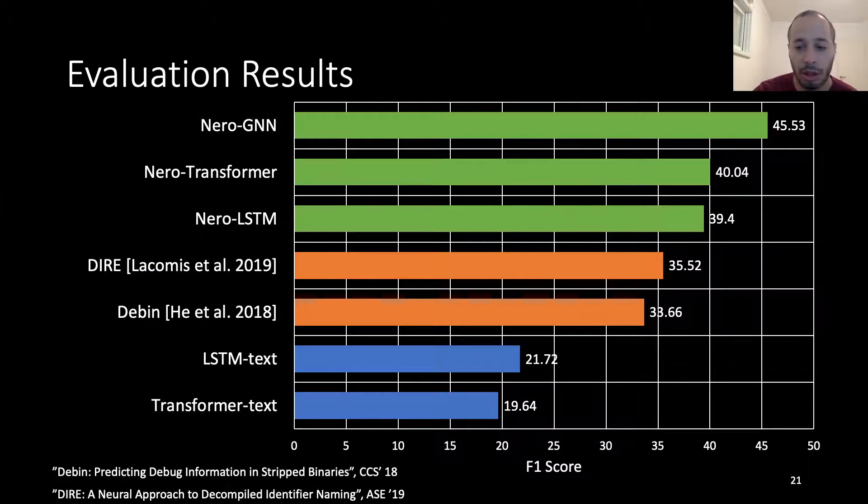As we can see in this bar chart showing F1 scores for each model, overall our modules outperformed all the other modules. Specifically, our GNN variation is the best achieving model. We see that our modules outperformed on average the vanilla text modules by 80% and our best module outperformed the best competing module by almost 30%.